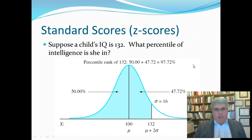Suppose, for example, that a child's IQ is 132. What percentile of intelligence is she in? Well, we could look at the chart over there, and we could see, okay, so she's in the top half. So, we've got 50% over on this side.